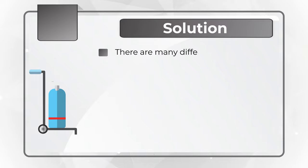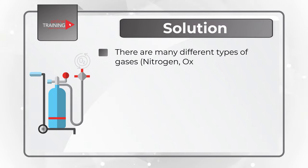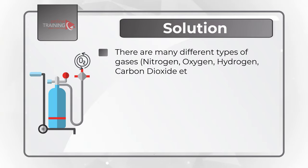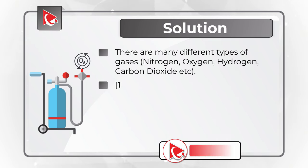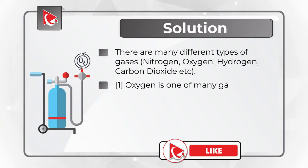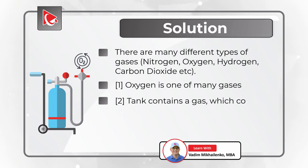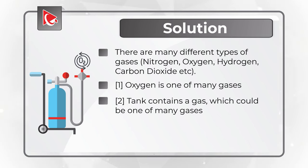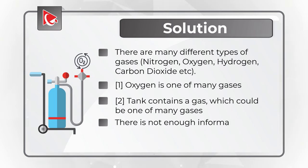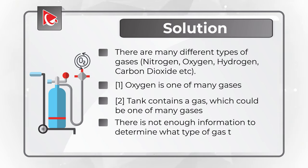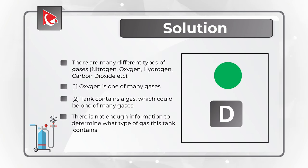There are many different types of gases — for example, nitrogen, oxygen, hydrogen, carbon dioxide, and a lot of others. Oxygen is just one of many gases, which is clearly indicated in statement 1. And the tank contains a gas, which could be one of many gases, which is shown in statement 2. Based on this, there is not enough information to determine what type of gas is stored in the tank. So the correct choice here is Choice D: cannot determine.